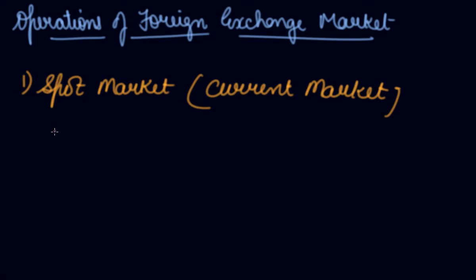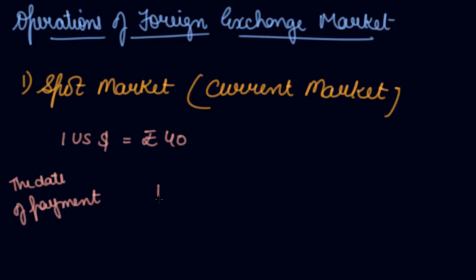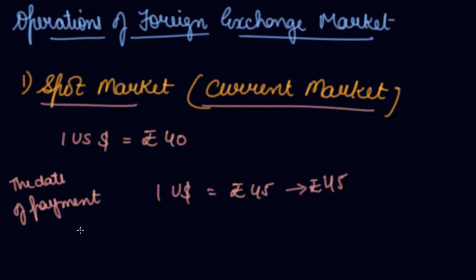For example, you have purchased machinery from the USA and at that point of time the US dollar was Rs.40. But on the day you are making payment, the US dollar is Rs.45. So you will be paying according to Rs.45. This is the spot market — the current market — which means you are transacting at the rate currently prevailing in the market. The spot market handles only spot or current transactions.